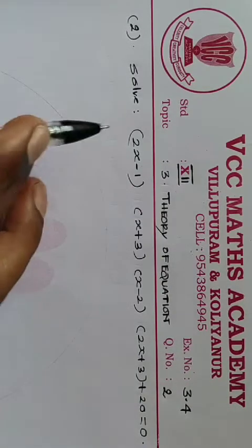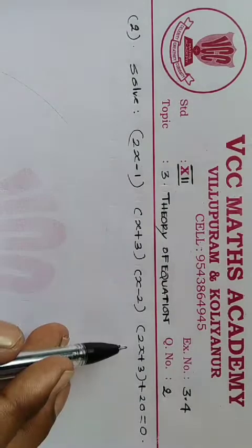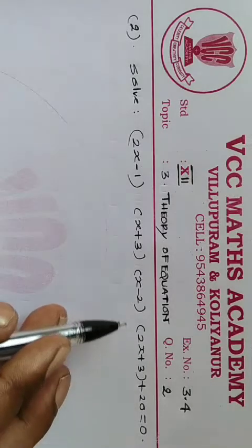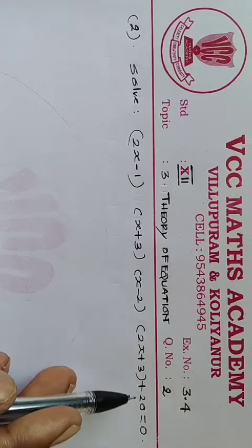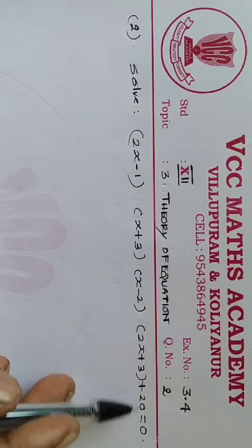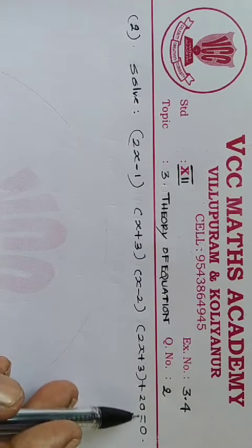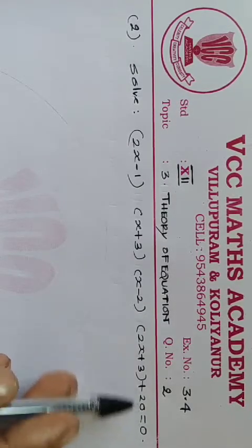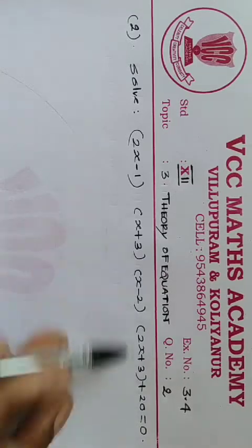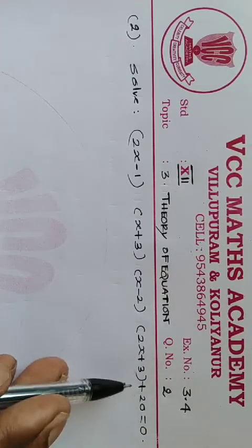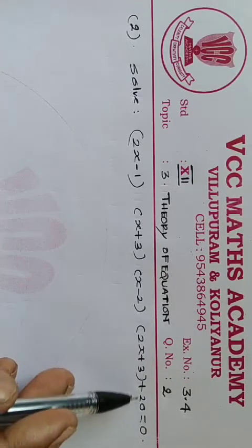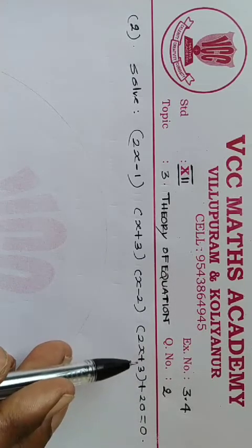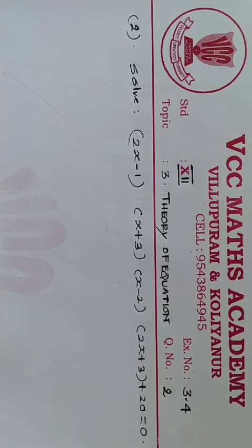I am going to show you 4 factors. The factors are equal to 0, and we have a direct answer to the x₀ value. So we are going to group it.